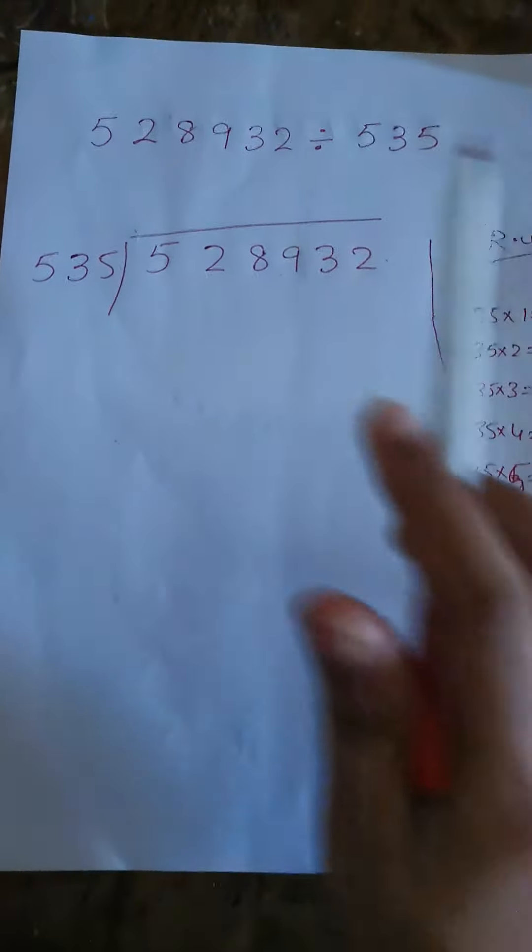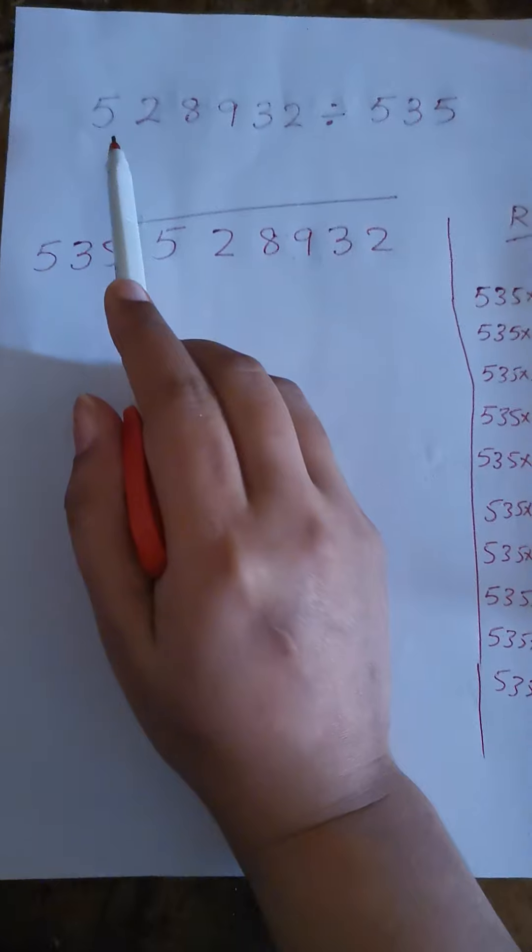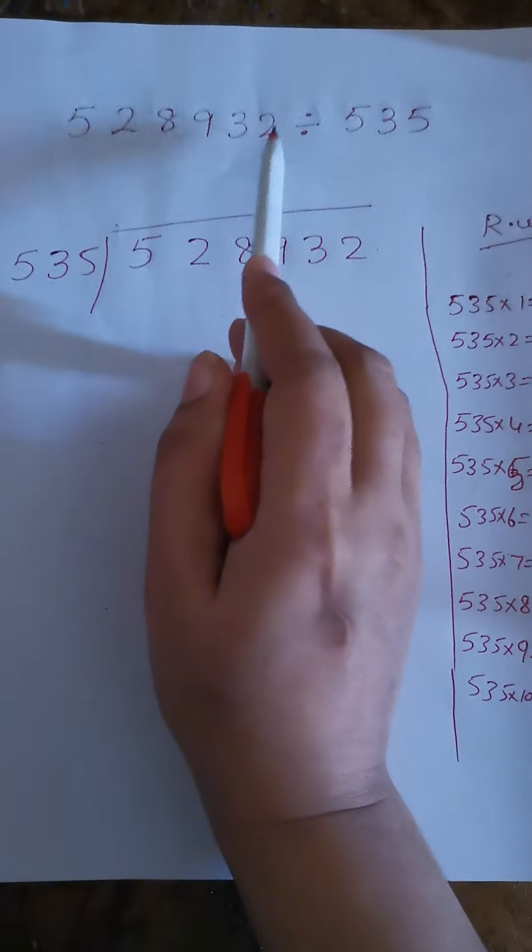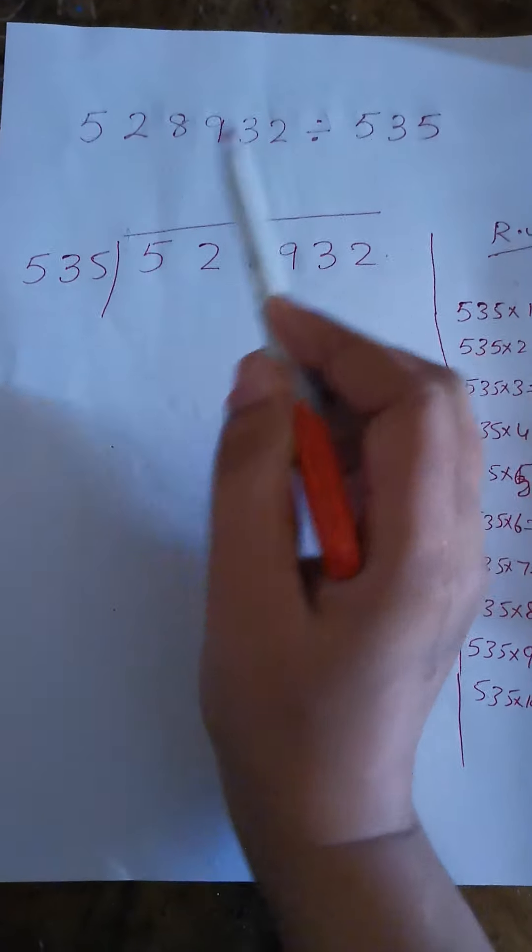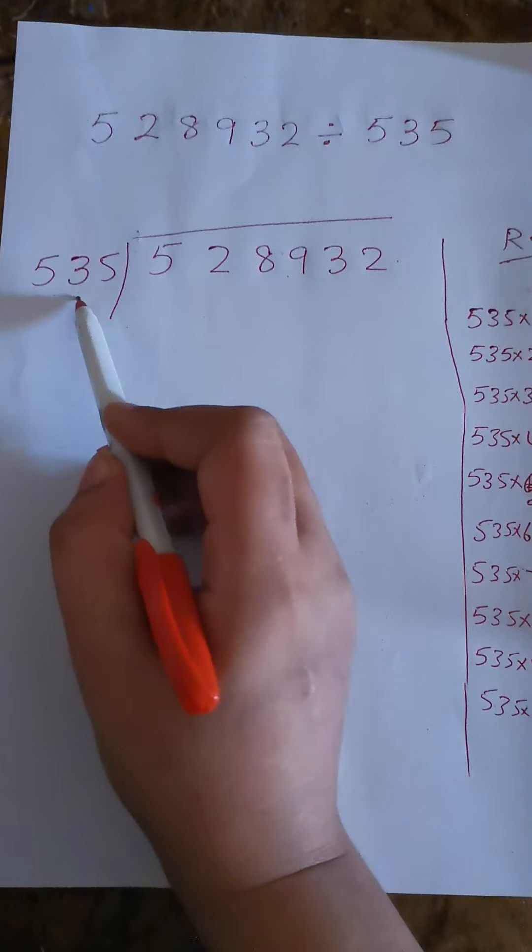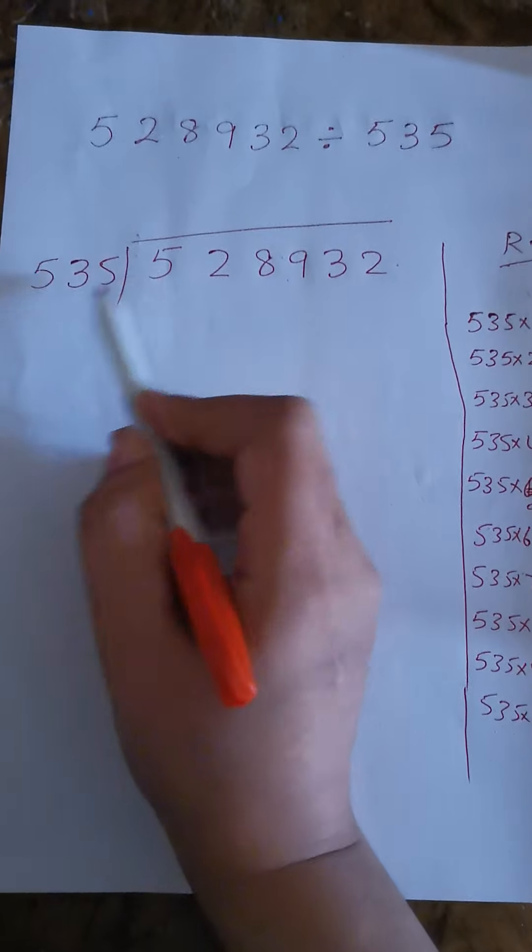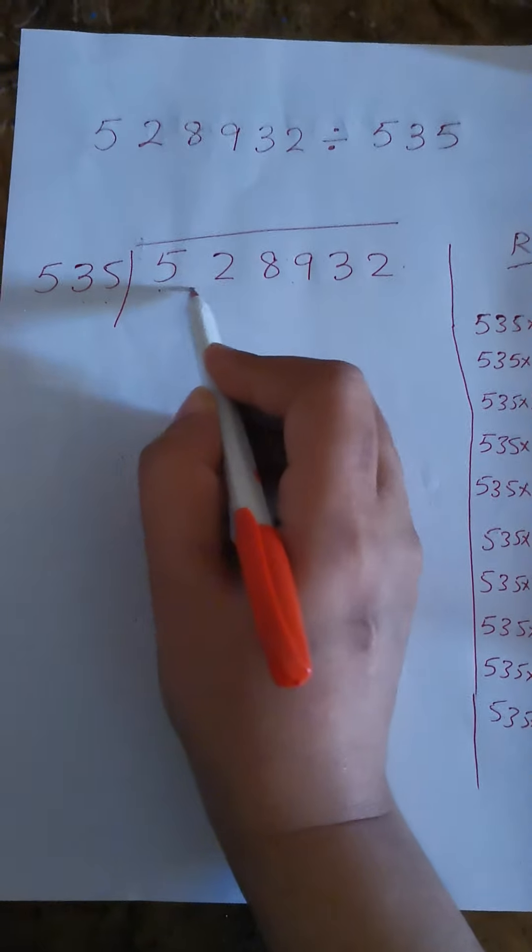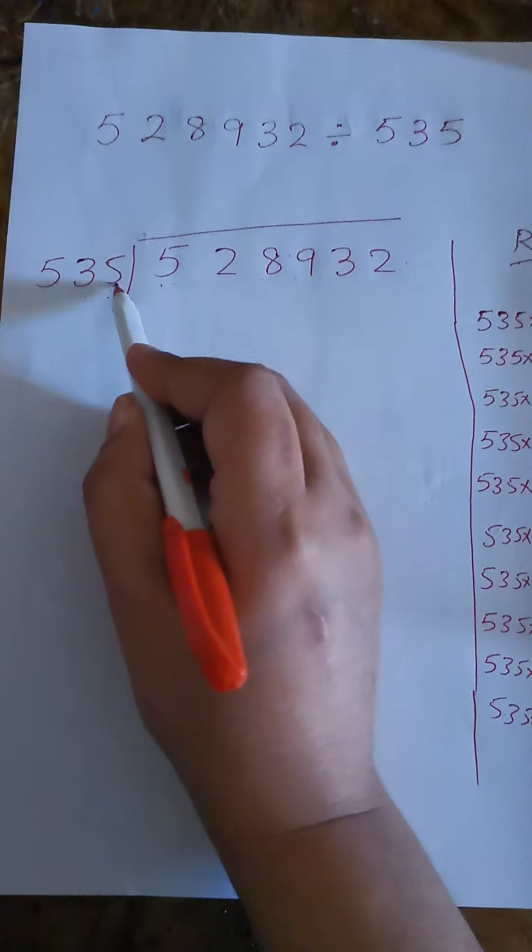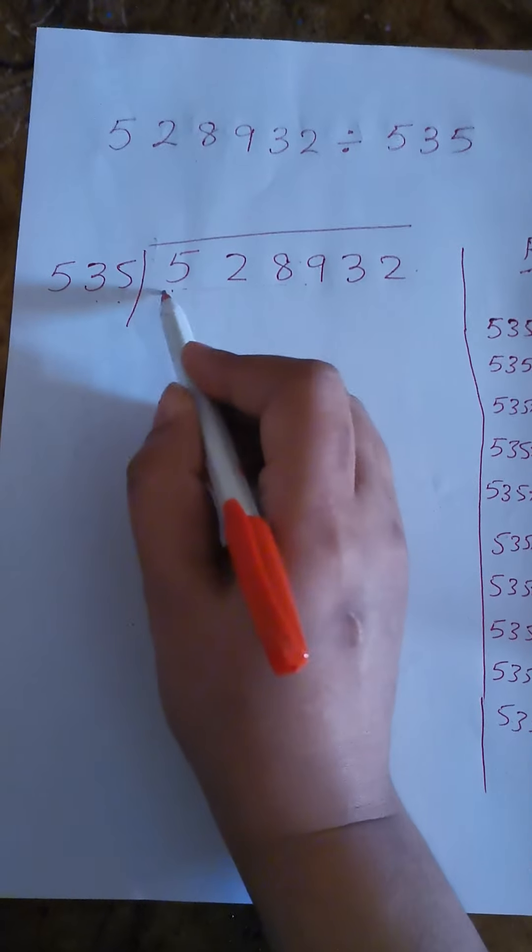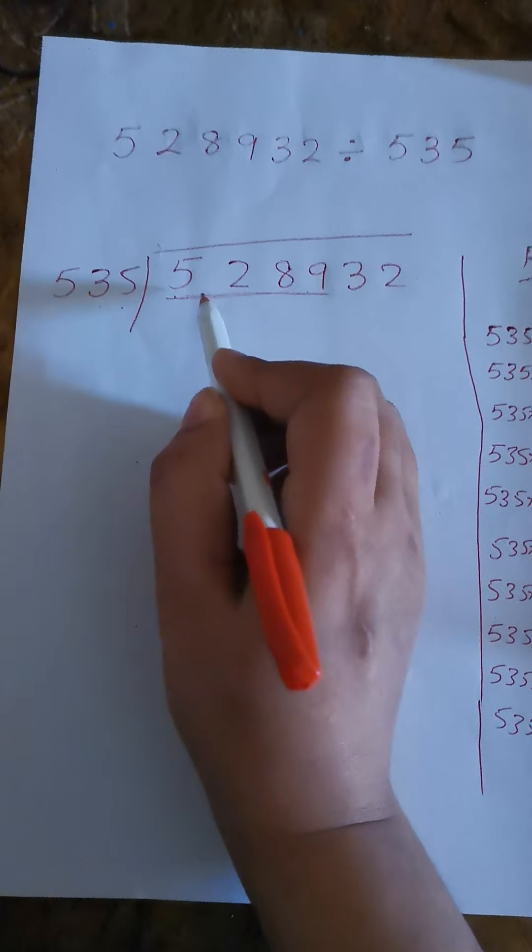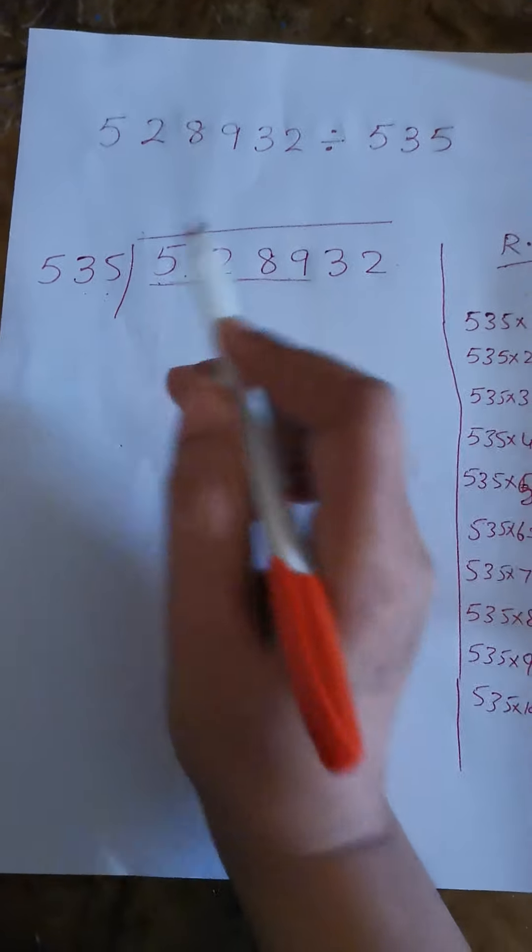Bismillahirrahmanirrahim, assalamu alaikum. We have to divide 528,932 by 535. So let's start. 535 is a three-digit number. We will check first these three digits: 528, which is less than 535. This means we need to take four digits from there for dividing.